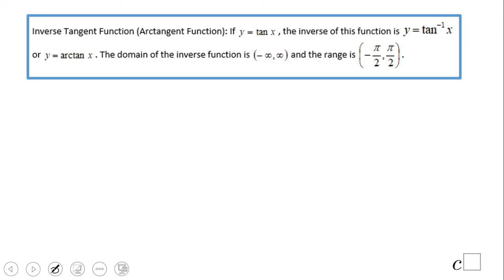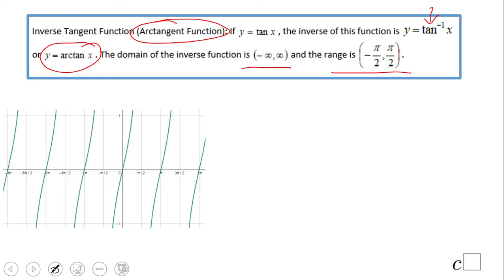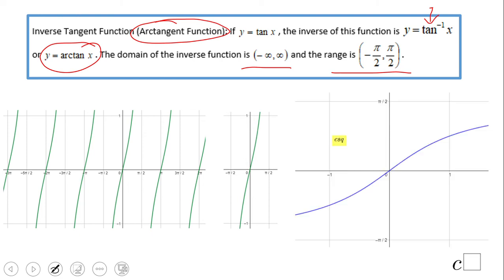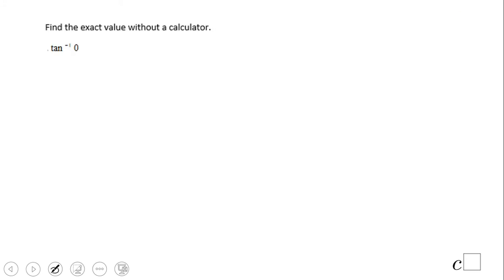The last inverse trigonometric function is what we call arc tangent, the inverse of the tangent function. You see here the notation or this one. One more time, take a look at the domain and the range. The same idea: we restricted the domain here of the tangent and there you go, this is the inverse of the tangent, arc tangent.